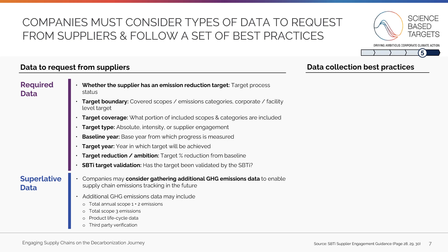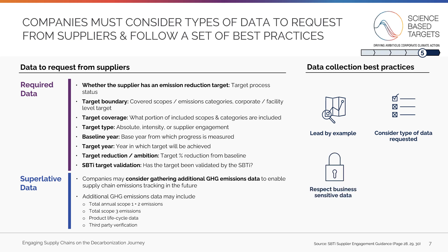Finally, you may face concerns from suppliers about data confidentiality and sensitivity. To build trust and mitigate these issues, you should consider the following guidelines. First, lead by example to build credibility with suppliers, demonstrating your own actions to track and manage emissions. Carefully consider whether highly sensitive data such as specific locations or proprietary product information needs to be collected. Respect business sensitive data by establishing a secure internal process which ensures that data is not shared or accessed for any purpose other than environmental tracking, and communicate these measures when requesting data. Finally, consider leveraging external technology solutions which help maintain supplier data ownership and confidentiality, with examples included in the description below.